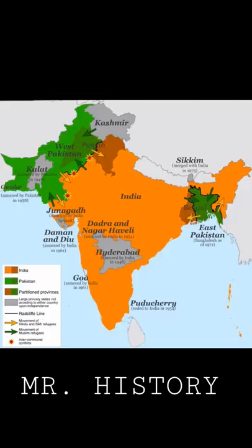It was named after its architect, Sir Cyril Radcliffe. In the above map, the green area is today's Pakistan — both east and west — and the orange represents the Dominion of India, and the gray represents